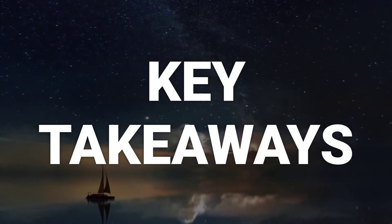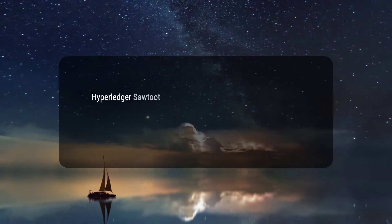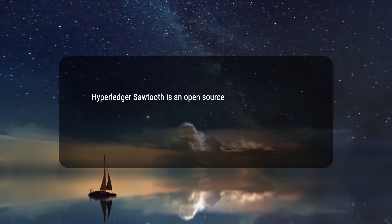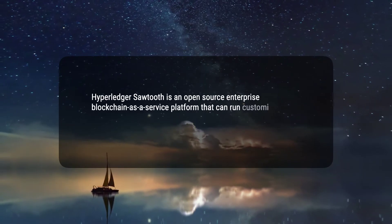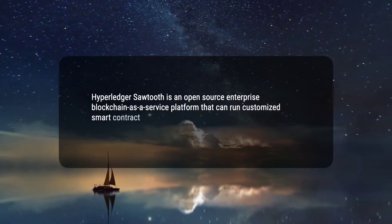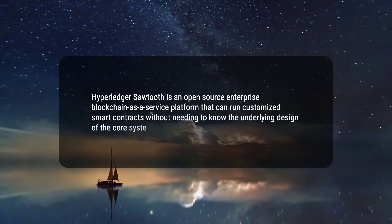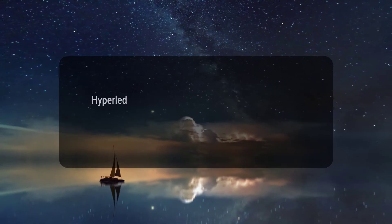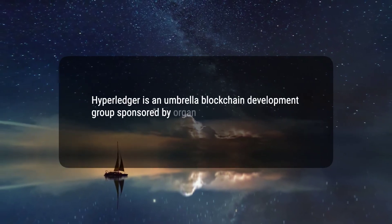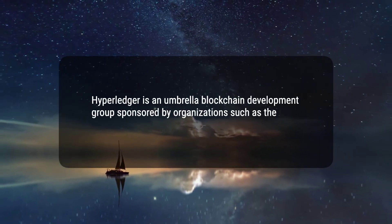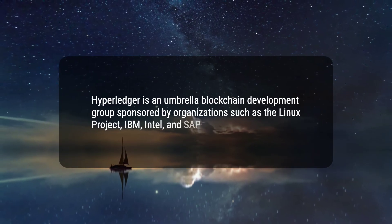Here are three key takeaways. One, Hyperledger Sawtooth is an open-source enterprise blockchain-as-a-service platform that can run customized smart contracts without needing to know the underlying design of the core system. Two, Hyperledger is an umbrella blockchain development group sponsored by organizations such as the Linux Foundation, IBM, Intel, and SAP.